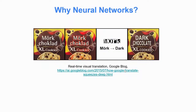Another example is real-time visual translation. Google launched their visual translation in 2015 — you can take an image of something with another language written on it and translate it to any language you want, for example from Dutch to English. It supports 20-plus languages and it's really fascinating, and it's built on neural networks as well.